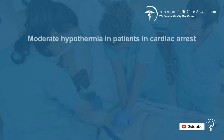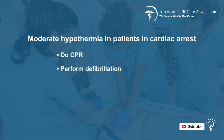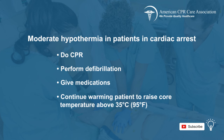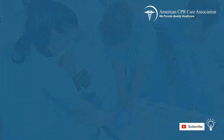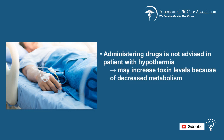For those in cardiac arrest with moderate hypothermia, observe the following steps: do CPR, perform defibrillation, give medications, and continue warming the patient to raise their core temperature above 35 degrees Celsius, which is equivalent to 95 degrees Fahrenheit. Administering drugs is usually not advised in a patient with hypothermia as they may increase toxin levels because of a decreased metabolism. The best practice is to focus on raising the patient's core temperature.